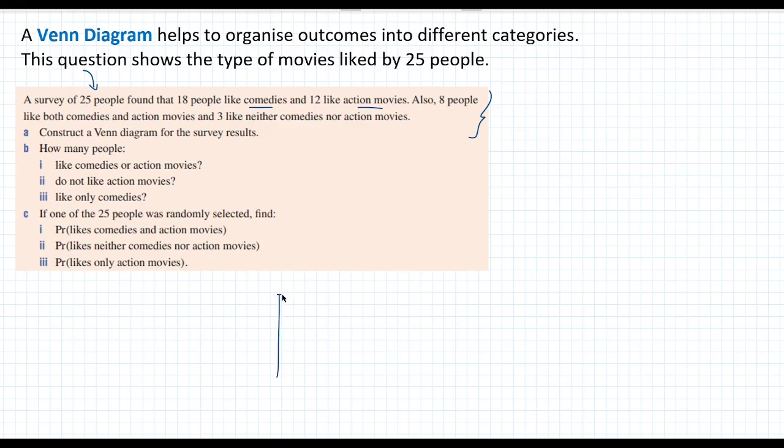So first, we draw a rectangle. And because we have two categories, we're going to draw two circles. One representing comedy movies and one representing action movies. Now, we're told that eight people like both comedies and action movies. So we're going to put eight in the middle.